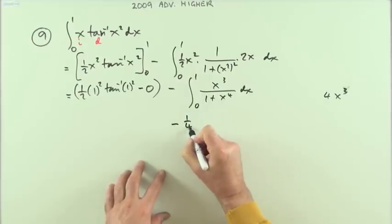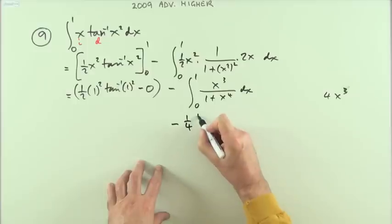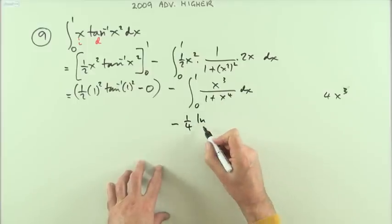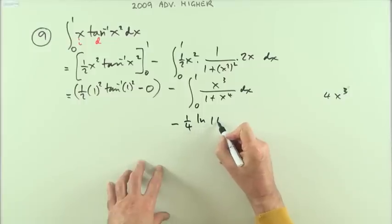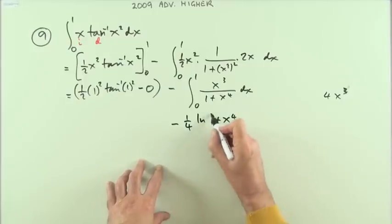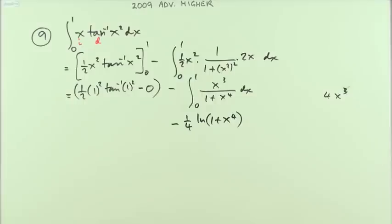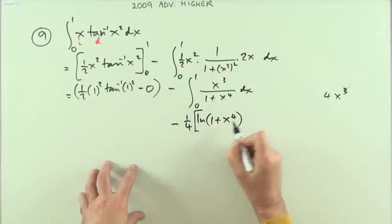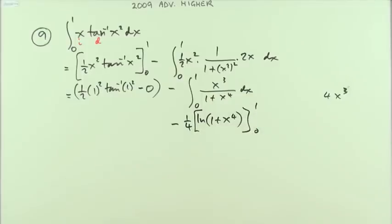So it'll be minus one quarter of ln 1 plus x to the 4, and I don't need the absolute value because that can never be negative, so I'm quite safe to put a bracket around that to be evaluated at 0 and 1.